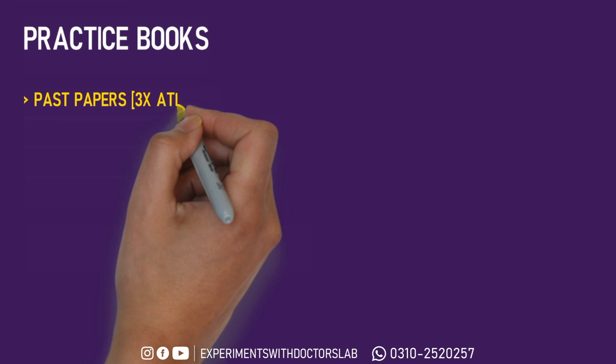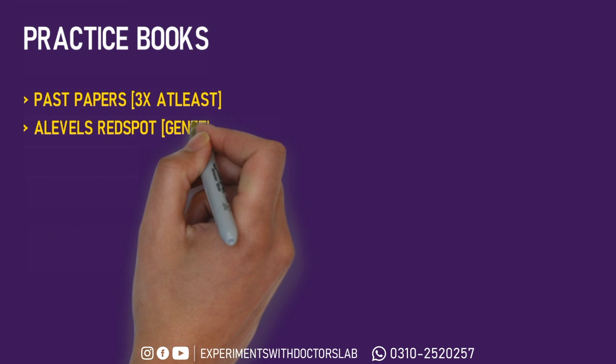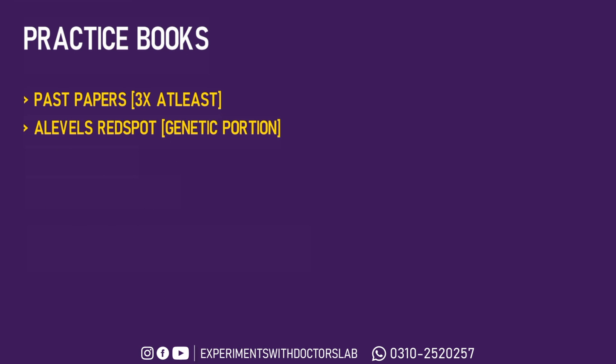For practice books, first of all you should practice past papers, and you should practice them not once, not twice, but thrice, because there are a lot of questions from past papers that repeat. Other than the past papers, you should practice from the A-level's Red Spot — the genetic portion is very important, well explained, and has concepts from which MCQs can come. Secondly, the Kaplan series. Third, Carvan Enterprises, from which the federal MCQs can be expected.